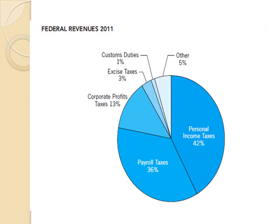This pie chart represents federal revenues in 2011. Personal income taxes account for 24%, payroll taxes for 36%, and corporate profits for 13%. The smallest percentage is custom duties, which represents 1%.